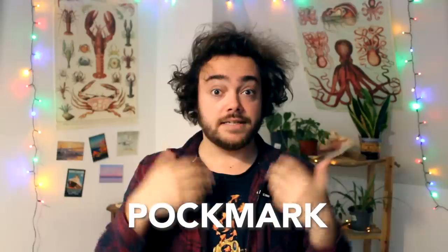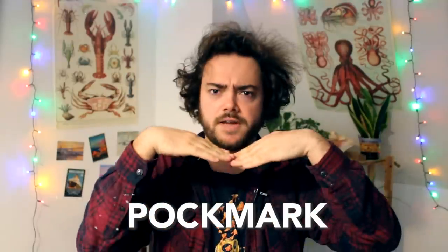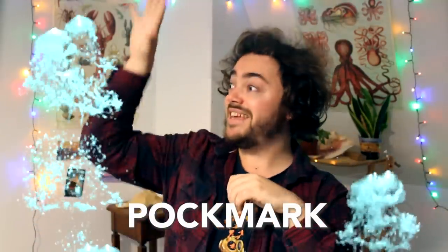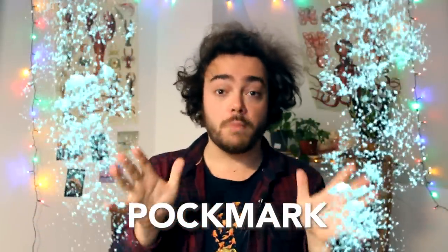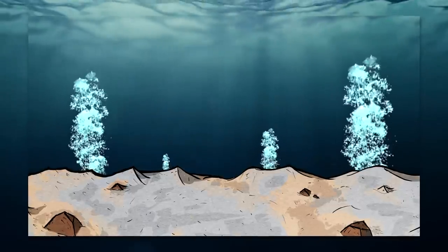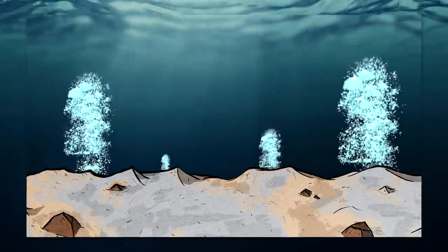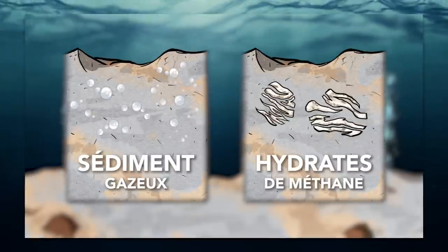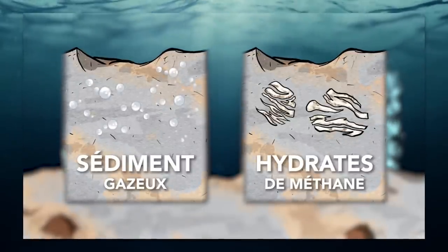Ce type de cratère sous-marin, c'est ce qu'on appelle un « pockmark ». Il s'agit d'une dépression sédimentaire créée par la libération d'énormes poches de gaz sous-marins. Les sols océaniques renferment en effet de larges réserves d'hydrocarbures, et qui se retrouvent fréquemment piégées sous la forme de petites bulles ou de glaces.